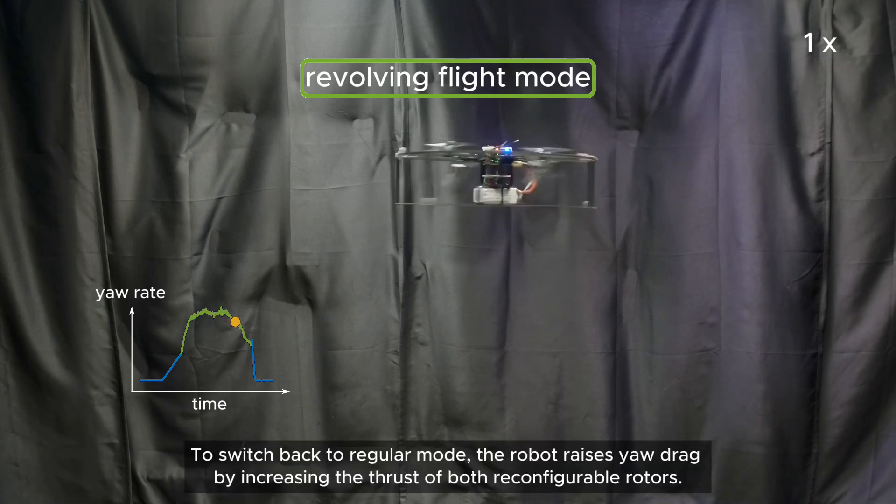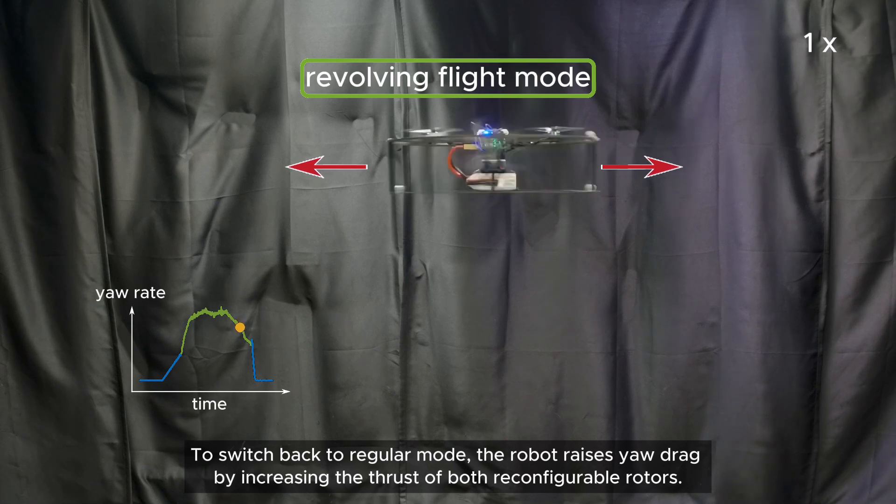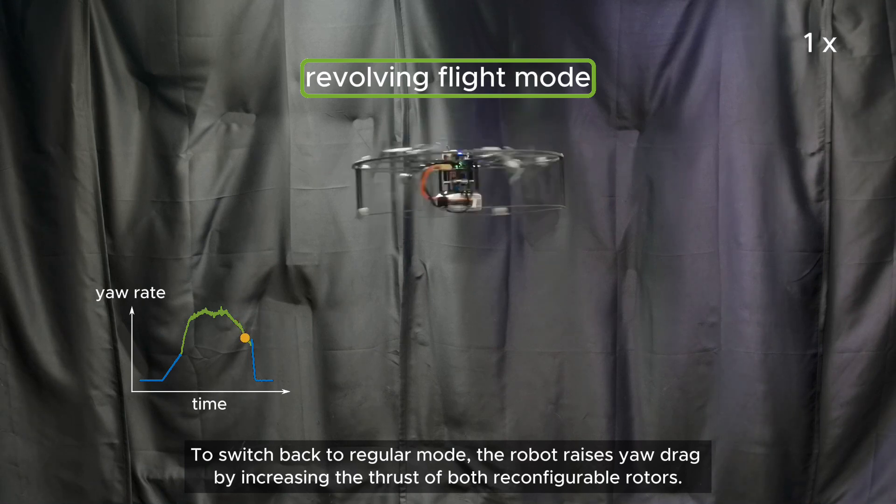To switch back to regular mode, the robot raises yaw drag by increasing the thrust of both reconfigurable rotors.